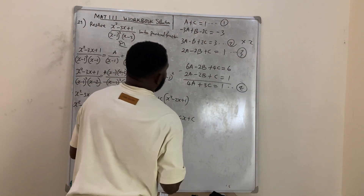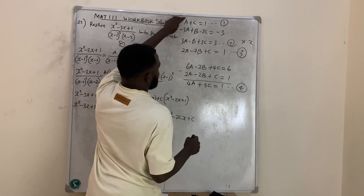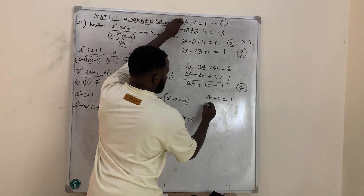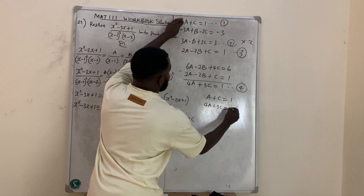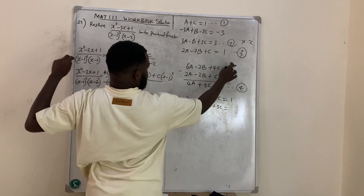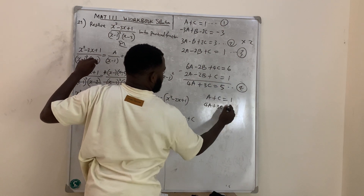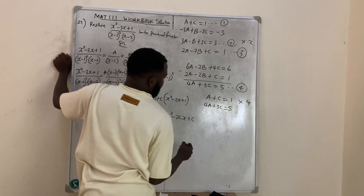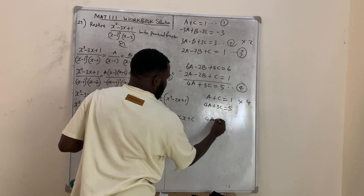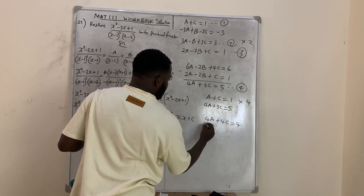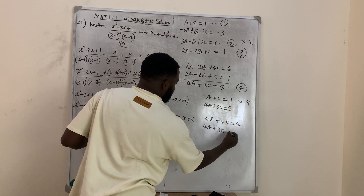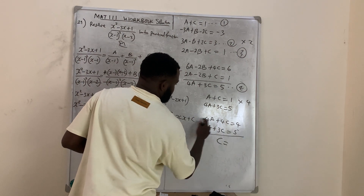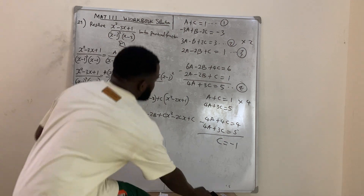Multiply equation 1 by 4: 4A + 4C = 4. Subtract equation 4 (4A + 3C = 5): C = 4 − 5 = minus 1. So C = −1.